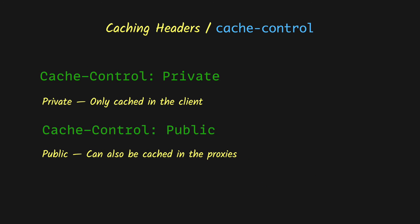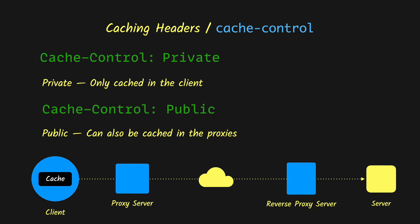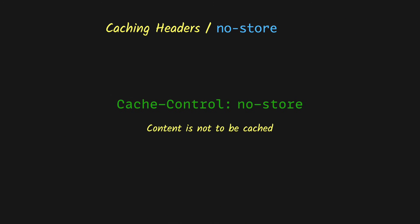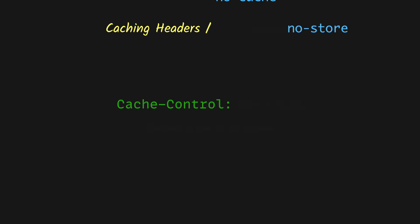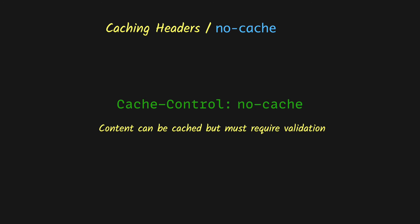Next we have the public directive, which means the cache is available to multiple users and can be cached publicly at any of the proxies. Then we have no-store, which means the content can't be cached anywhere — every time the client needs a resource it must make a call to the server for a fresh copy. Next we have no-cache, which means the content can be cached but the client must validate it with the server before reusing it — this is done using the ETag header, for example.